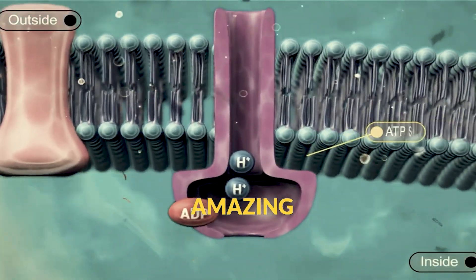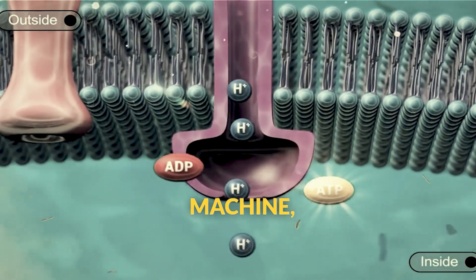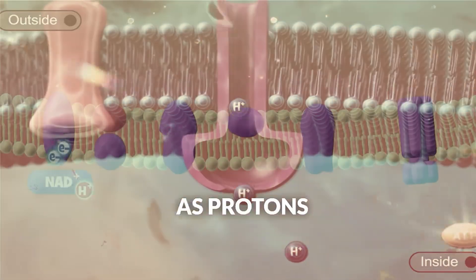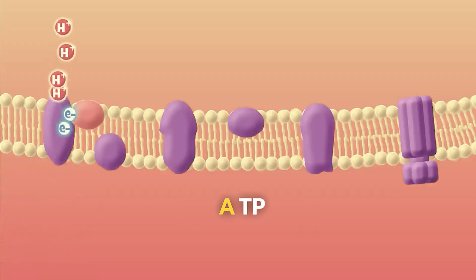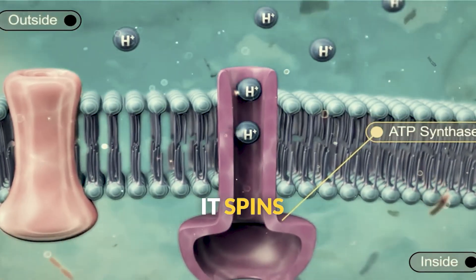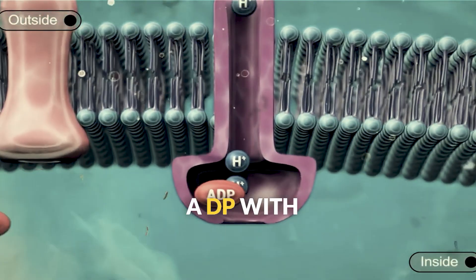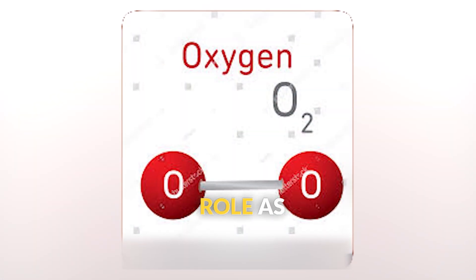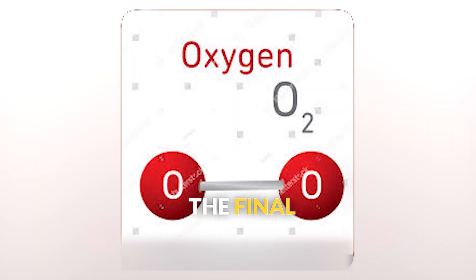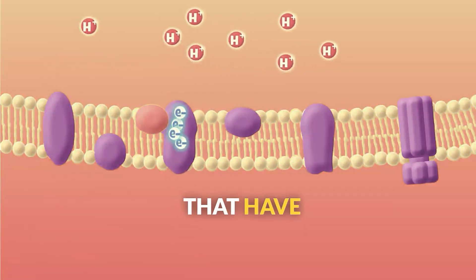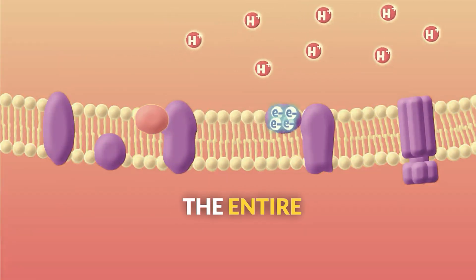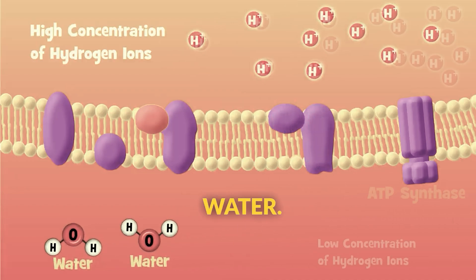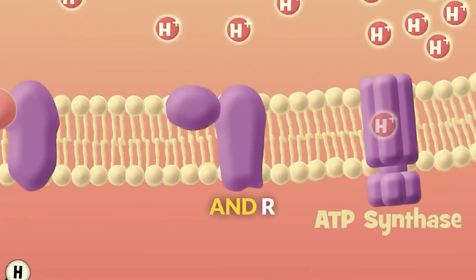ATP synthase, an amazing molecular machine, uses this proton gradient like a water wheel. As protons flow back through ATP synthase, it spins and combines ADP with phosphate to make ATP. Oxygen plays a crucial role as the final electron acceptor. Electrons that have traveled through the entire chain combine with oxygen and hydrogen to form water — the H2O in our equation.